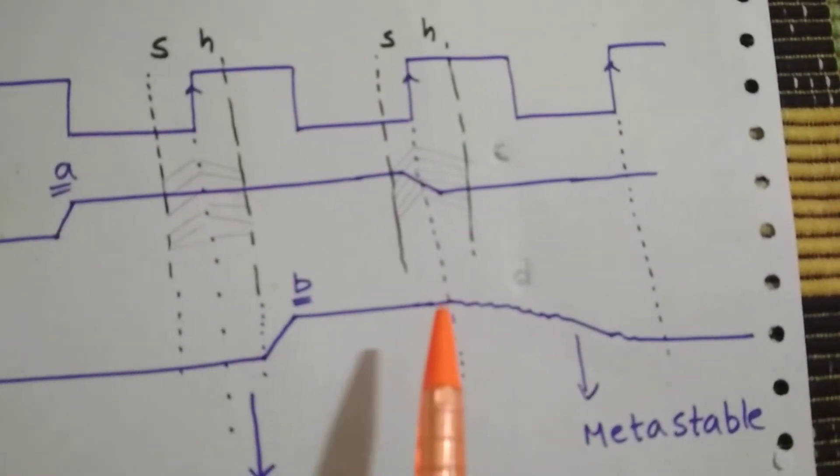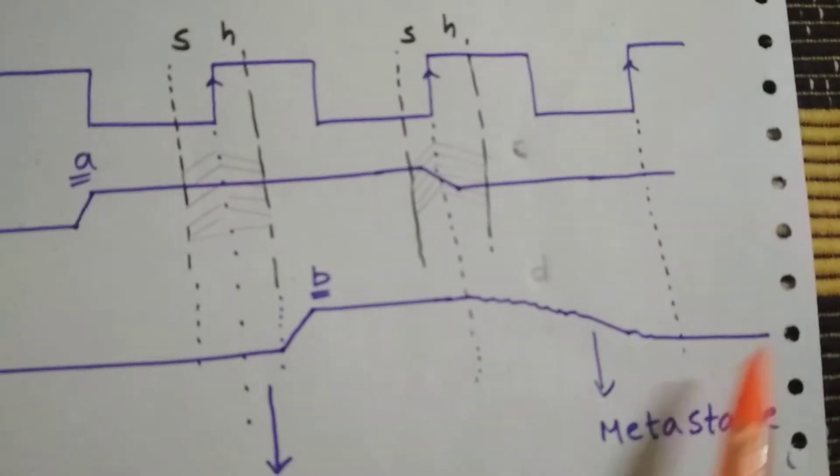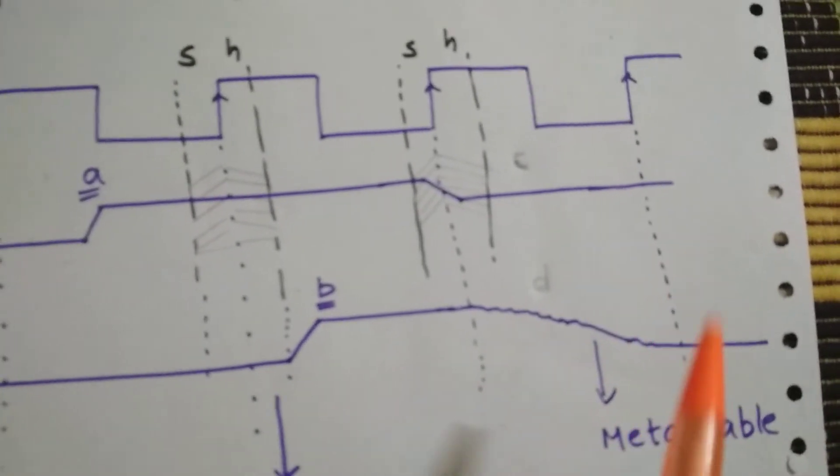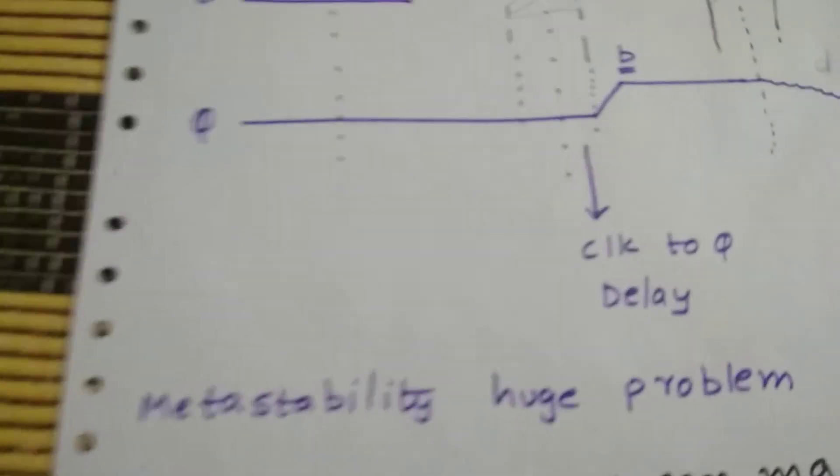So here the output has settled down to 0. In other cases, it might settle down to 1, which might lead to an error. So metastability is a huge problem.